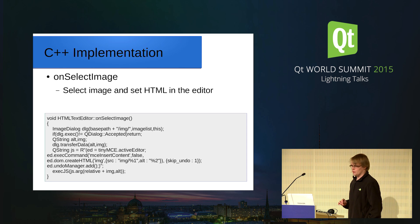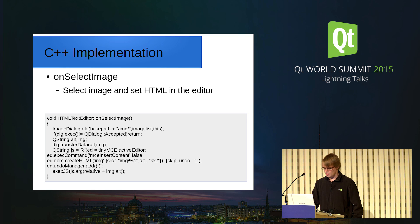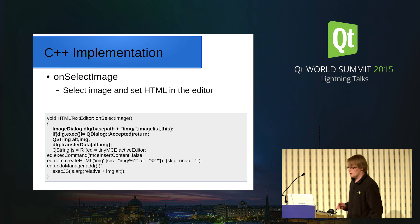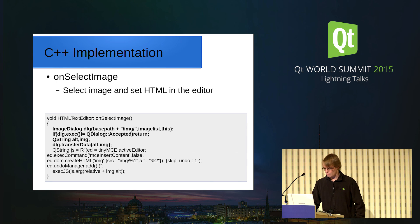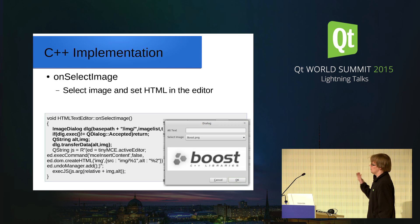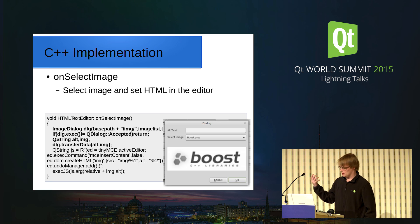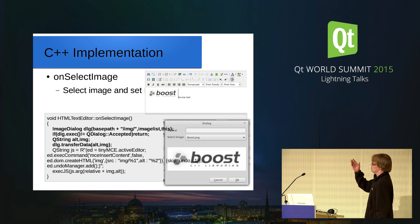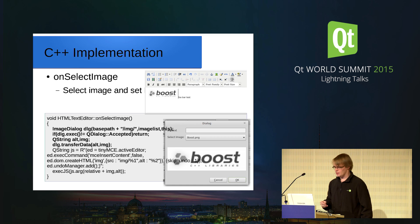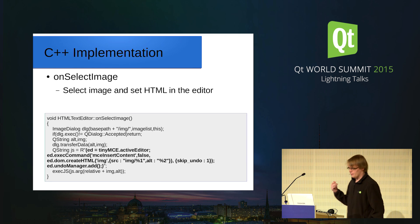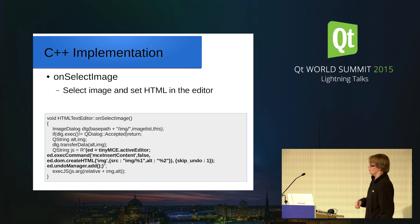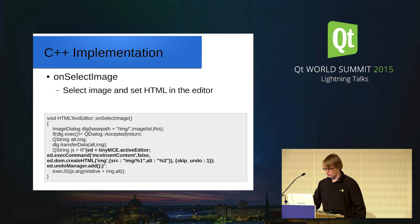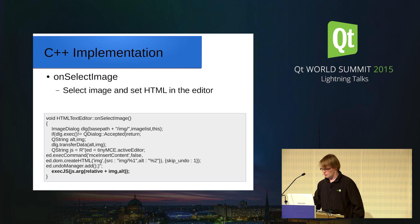This is the method where I handle selecting an image. I first have an image dialog which I execute in Qt code and show the images there. That is the editor after an image has been selected and displayed in JavaScript. After selecting the image, I execute the JavaScript code to insert it using the exact TinyMCE function.